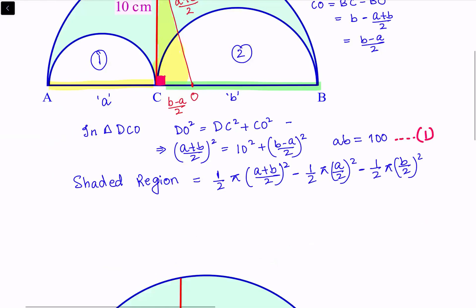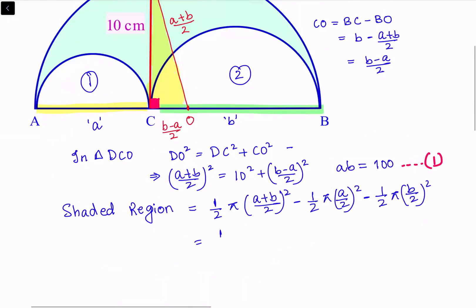Taking (1/2)π and (1/4) common, we get (π/2) times (1/4)[A²+B²+2AB-A²-B²]. On simplifying, the area is (π/4) times AB. Using the value AB = 100, we get the answer as (π×100)/4 or 25π centimeters squared. That's the area of the shaded region.